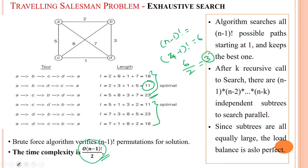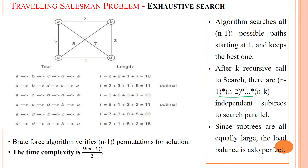This can be constructed using a recursive tree, making the K value decrease like N, N minus 1, N minus 2, and so on until N minus N equals 0. All these processes are taken as parallel processes, so the load balance will be perfect. Thanks for watching.